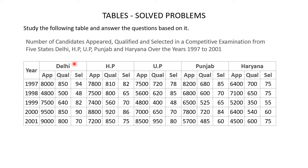Each column represents the five states: first column is for Delhi, second for Himachal Pradesh, third for Uttar Pradesh, fourth for Punjab and fifth for Haryana. Under each state, the columns are further subdivided to show the number of candidates who appeared, number who qualified and number who got selected in the competitive examinations.